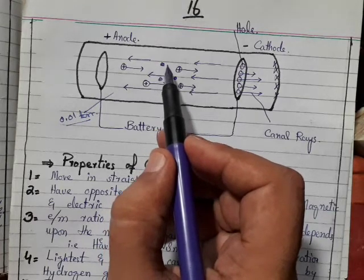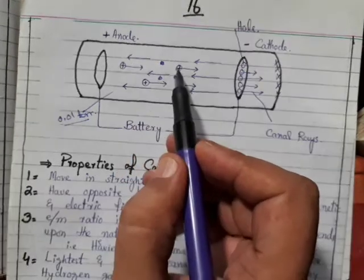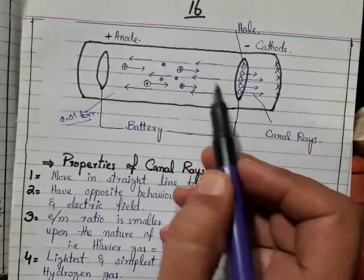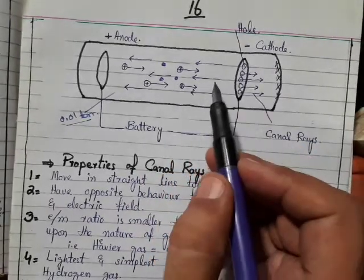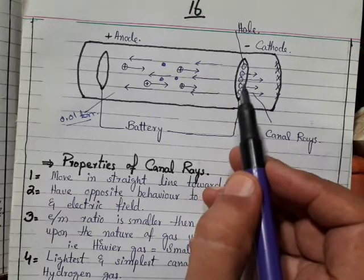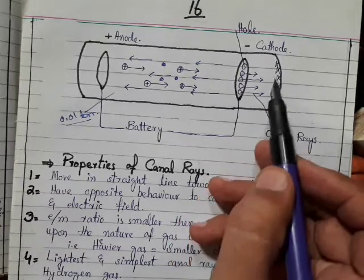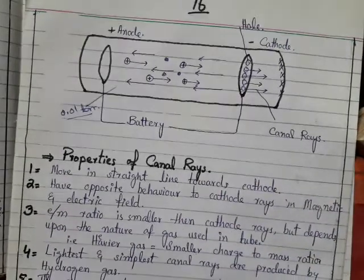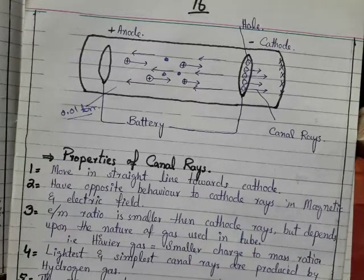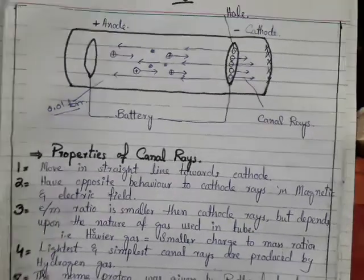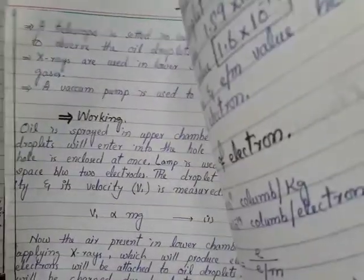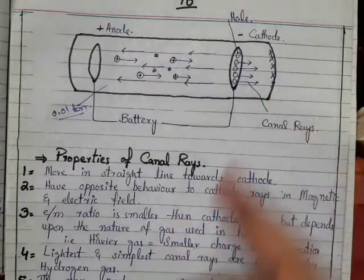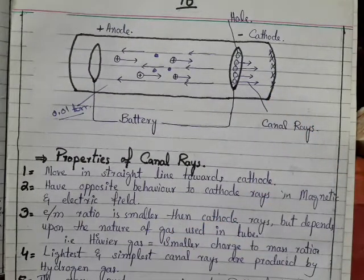This is a positive particle created. These later travel towards the cathode back. This is the path of positive particles. Goldstein has seen this canal rays from the back side, so this is the canal rays.